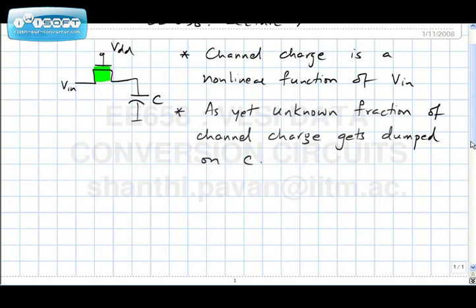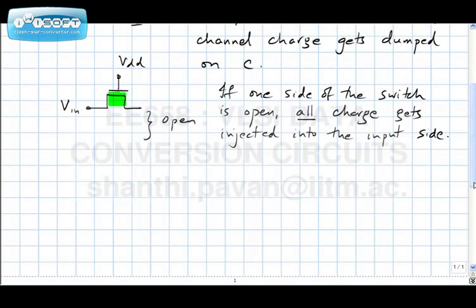Let me ask: if one side of the switch is an open circuit — no capacitor, nothing — with VDD at the gate and VIN at the source, where must the channel charge go when you turn the switch off? This channel charge cannot go into the open circuit, so it must go to the left, into the input. One observation: when one side of the switch is open, all charge gets injected into the input. This does not depend on device physics details — it is straightforward to see.